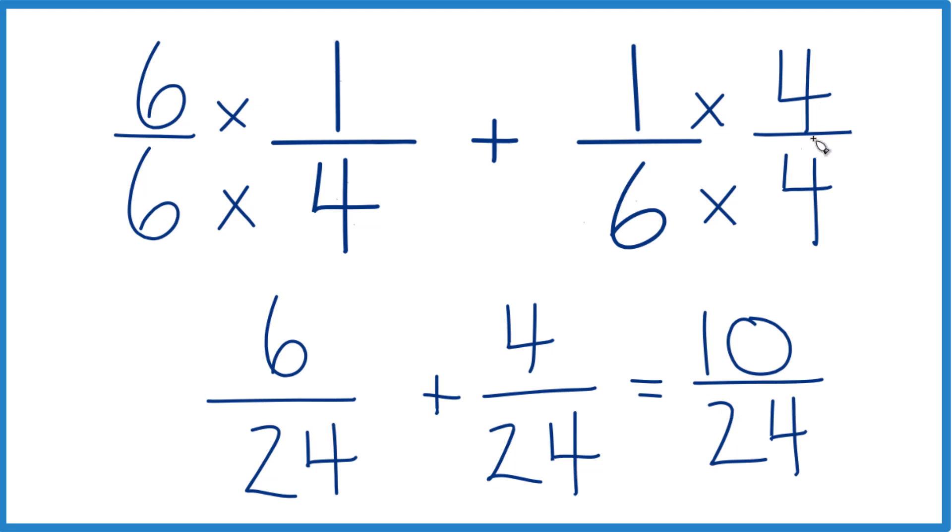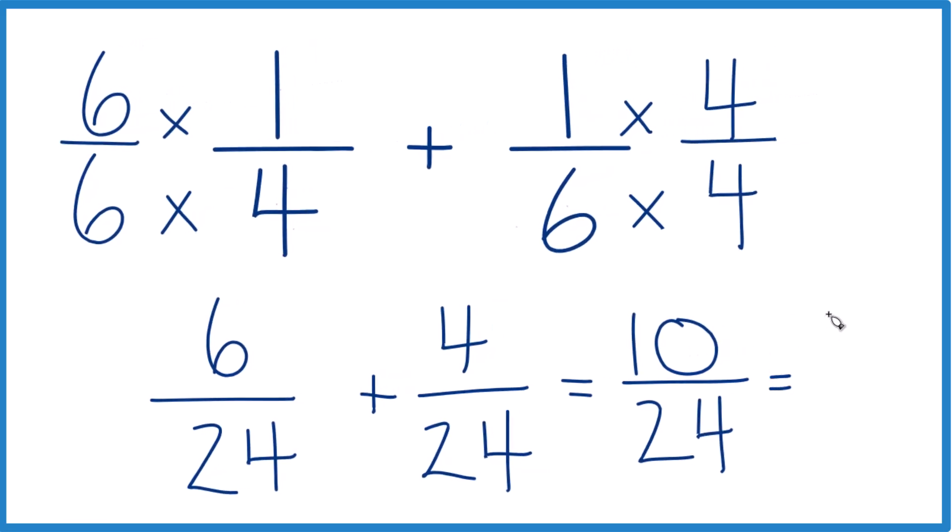You could reduce this down. These are both even numbers. Let's divide both the numerator and the denominator by 2. 10 divided by 2 is 5, 24 divided by 2 is 12. So we could simplify that down to 5 twelfths.